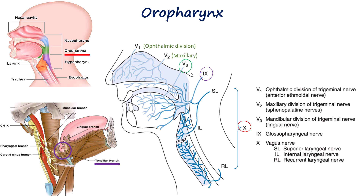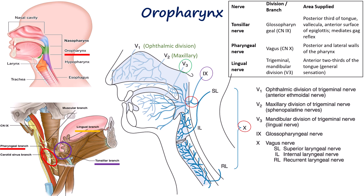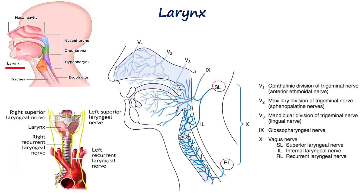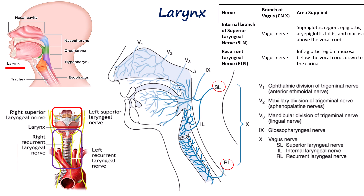This nerve is also responsible for the gag reflex. The posterior and lateral wall of the pharynx are innervated by the pharyngeal nerve, a branch of the vagus nerve. The anterior two-thirds of the tongue are innervated by the lingual nerve, which is a branch of the mandibular division of the trigeminal nerve. The larynx's sensory innervation comes primarily from two branches of the vagus nerve: the superior laryngeal nerve and the recurrent laryngeal nerve. The internal branch of the superior laryngeal nerve provides sensory innervation to the supraglottic region, including the epiglottis and the mucosa above the vocal cords. The recurrent laryngeal nerve provides sensory innervation to the infraglottic region, below the vocal cords and to the level of the carina.